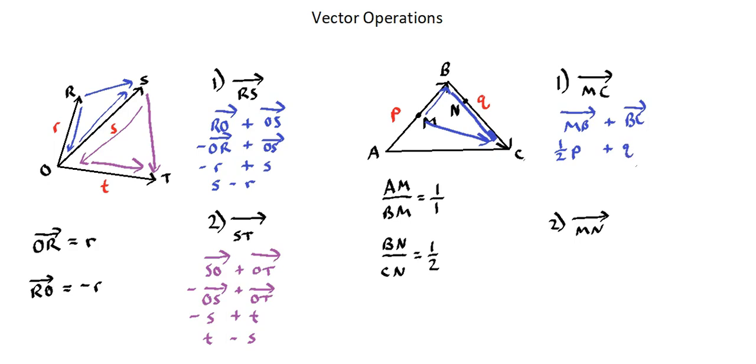Thus in terms of small letter P and small letter Q, the vector MC is represented as one half P plus Q. Now let's evaluate MN.